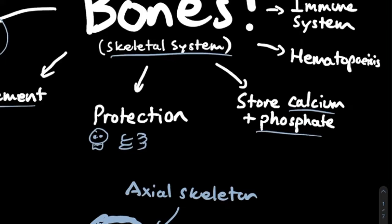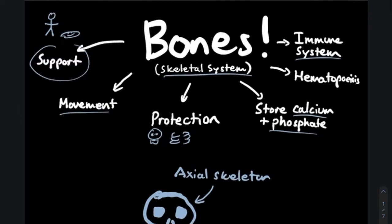Next we have hematopoiesis — the generation of cells derived from within the bone marrow, including red blood cells, megakaryocytes, and immune cells. The overall purpose of going through these functions is to show that bone is a very dynamic environment involved in so many different processes. Although bones might look like static fossils, in reality it's an extremely dynamic environment that our bodies take advantage of in so many different ways.